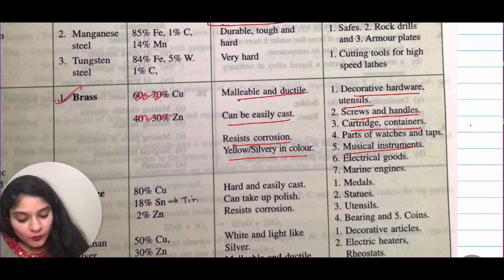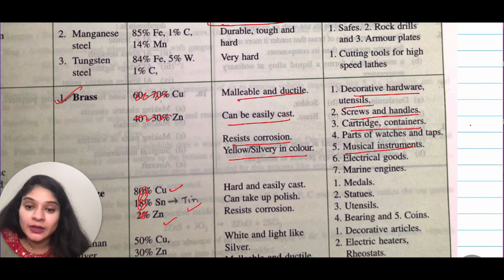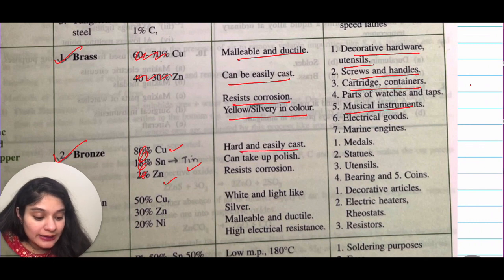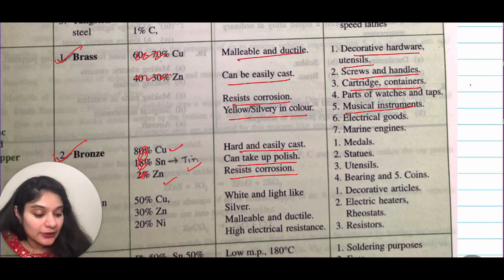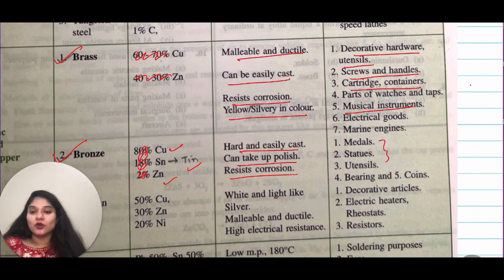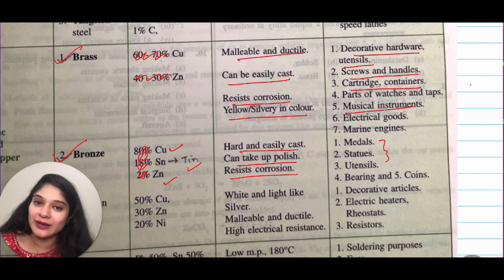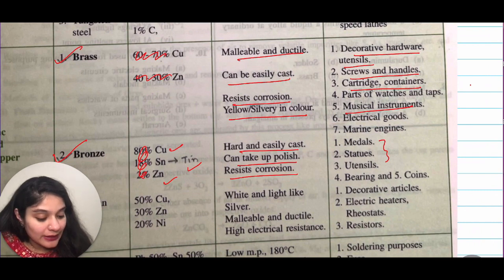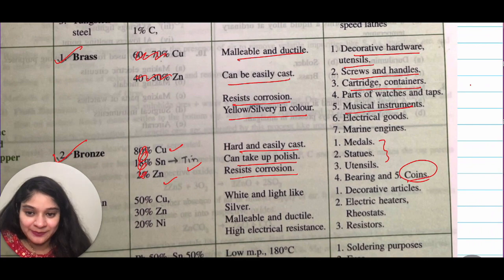Bronze is made up of copper, tin, and zinc. The difference between brass and bronze is that brass does not have tin. Bronze is hard, easily cast, can take a polish, and resists corrosion. It is used in making medals — you would know the gold, silver, and bronze medal for second and third positions. It was also used to make coins, and in some places it is still used.